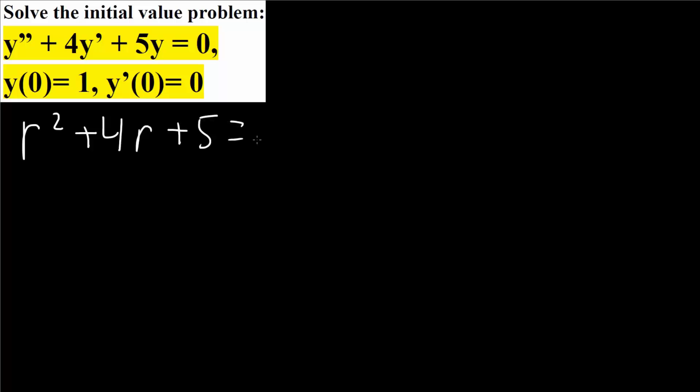Since it's a second order equation with y double prime, we can write the characteristic equation as r squared plus 4r plus 5 equals 0.